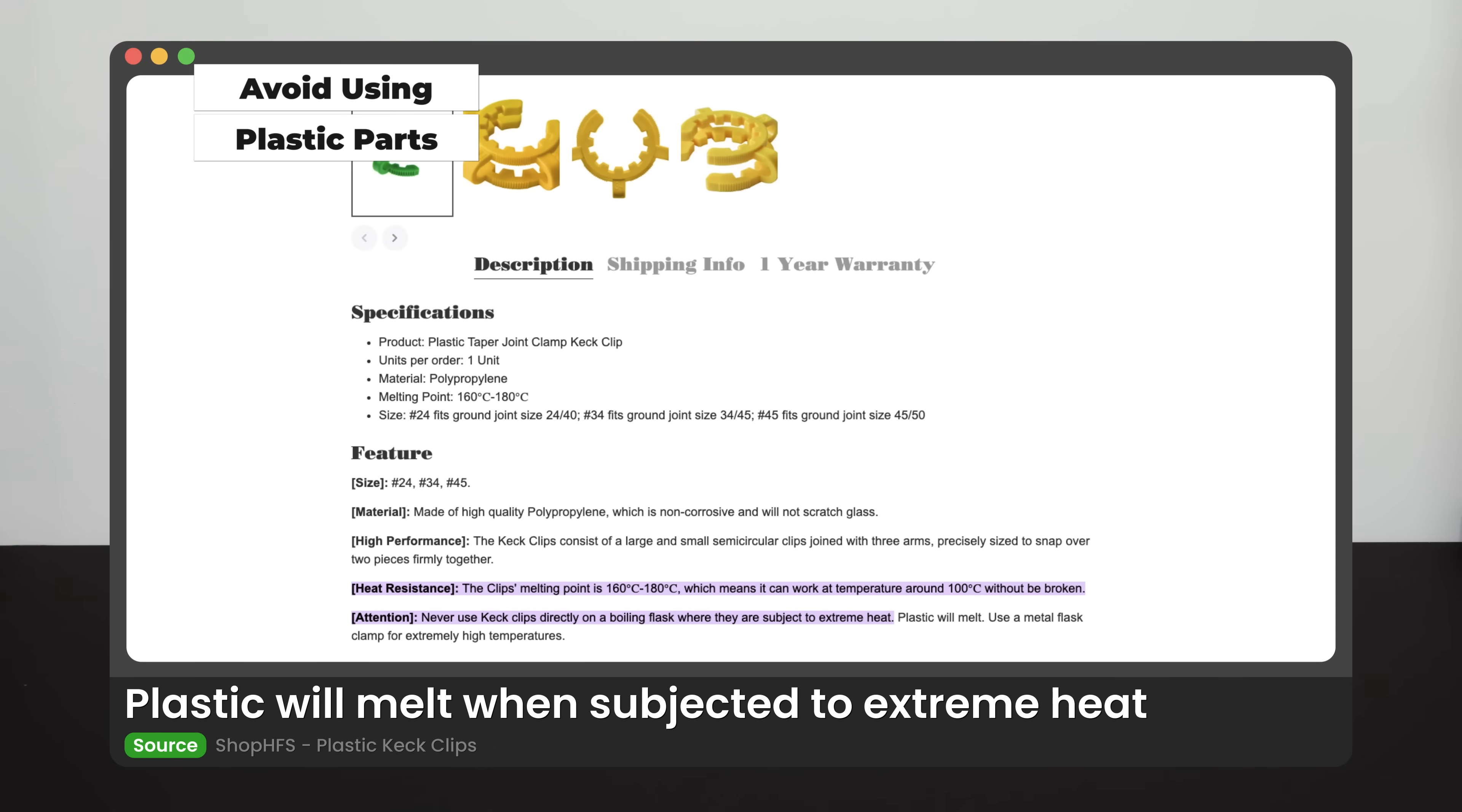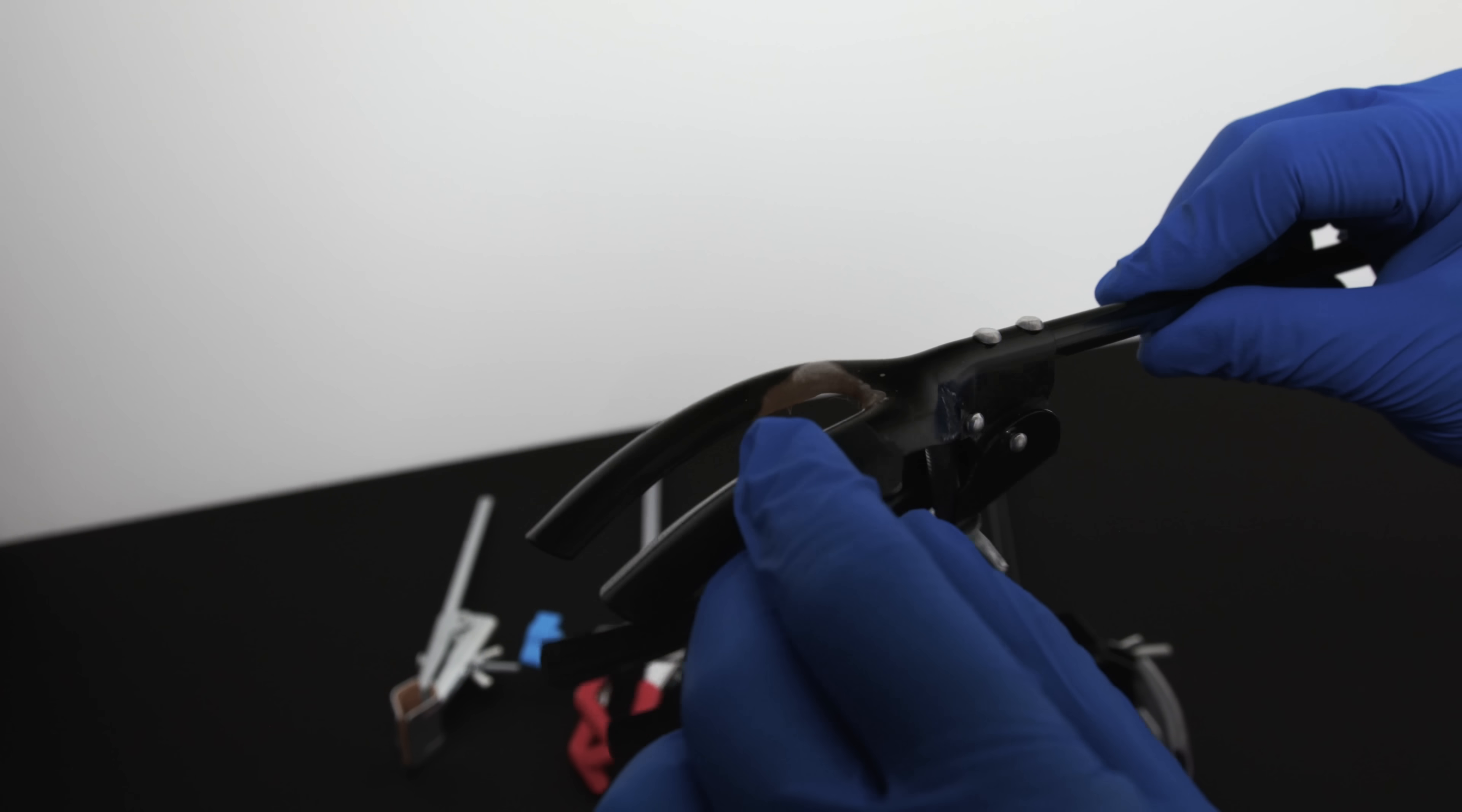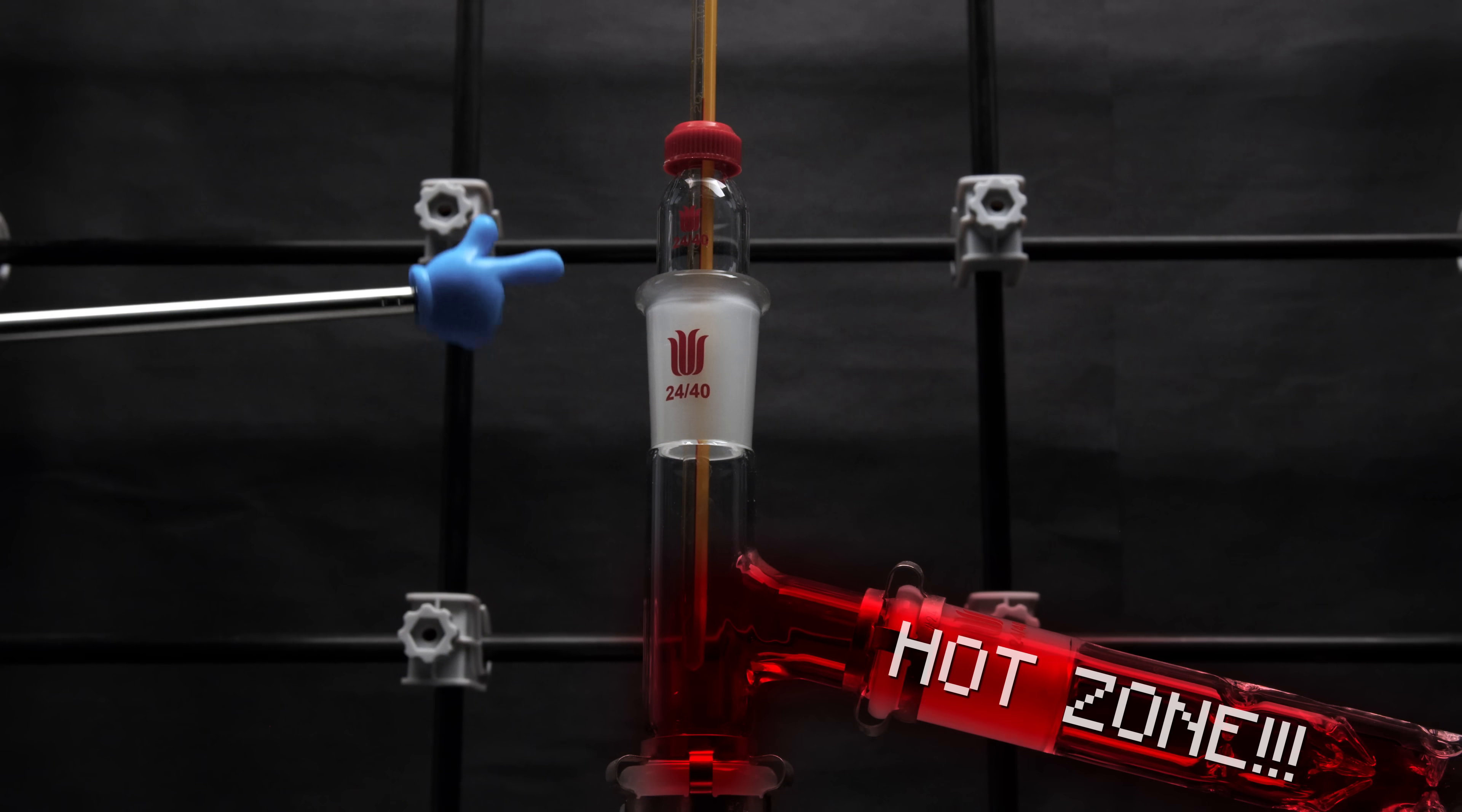In case you didn't already know, you must avoid using plastic parts, including plastic clamps or keck clips in the setup. They can't withstand the heat from the distillation and will melt right away. Also note that the paint or coating on some of your clamps might melt too. I strategically clamped my apparatus in a position that is less heated, so the coating on my clamps is less likely to melt.